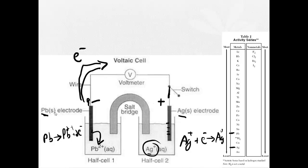Now, lead is losing electrons. Oxidation is losing. Silver is gaining electrons. Reduction is gaining. Red cat, reduction at the cathode. This is the cathode.